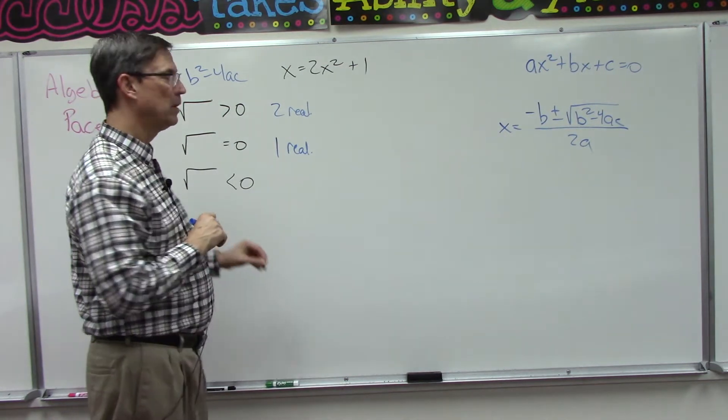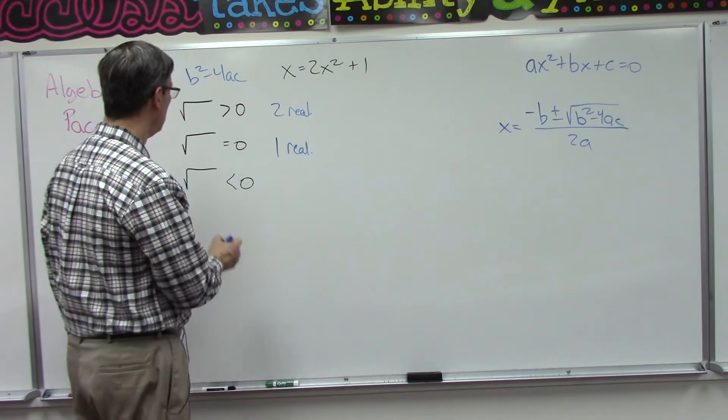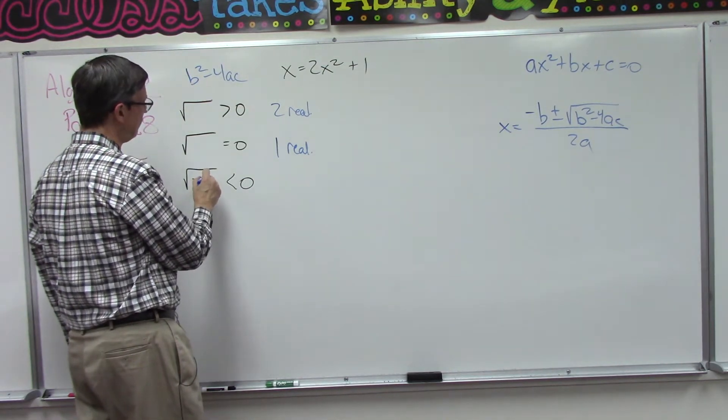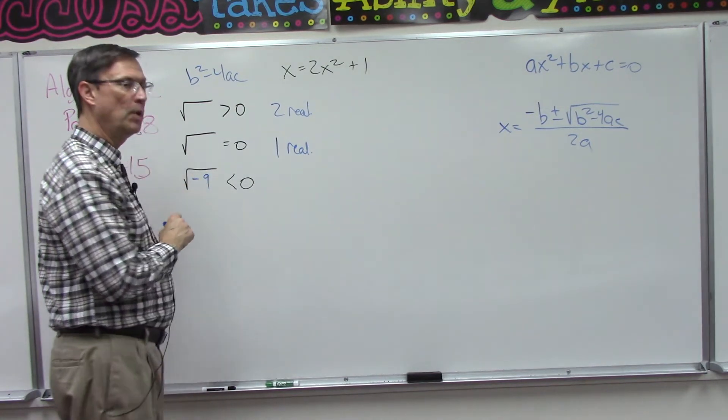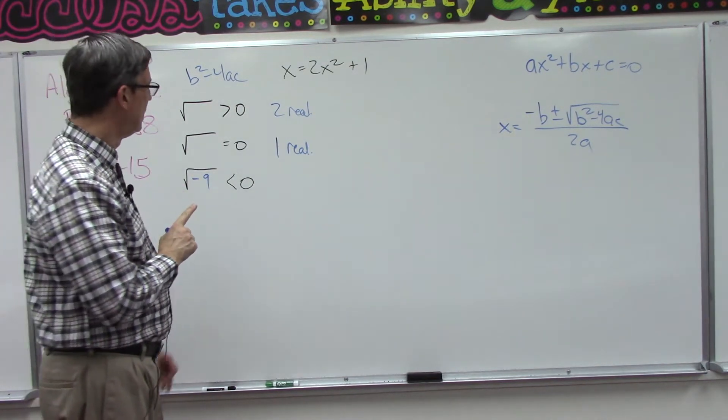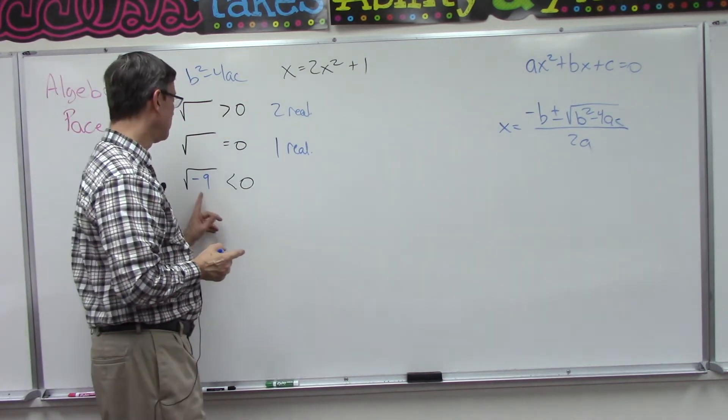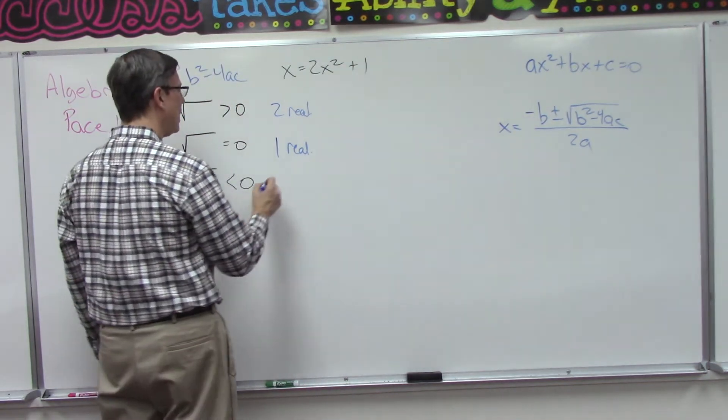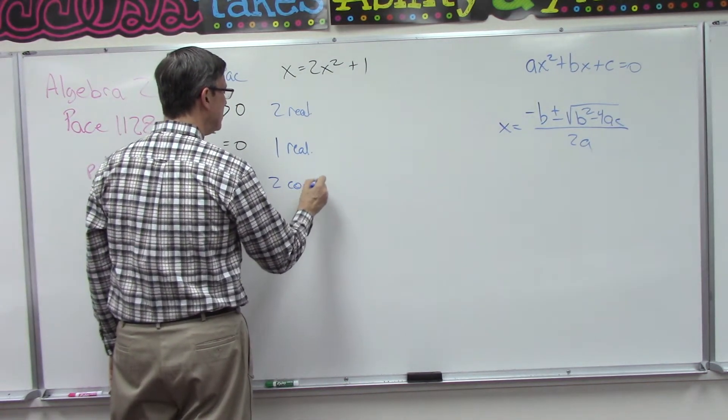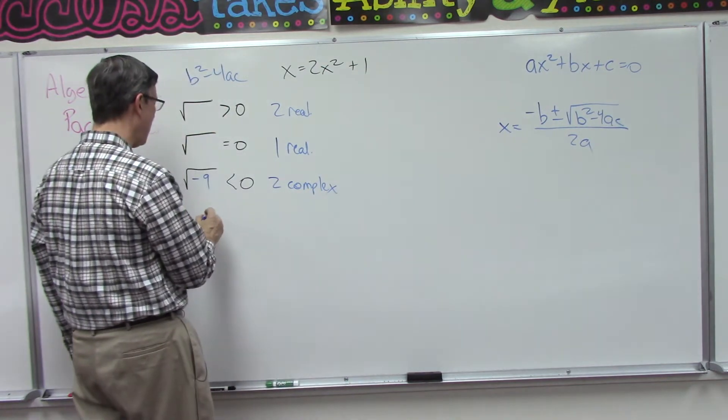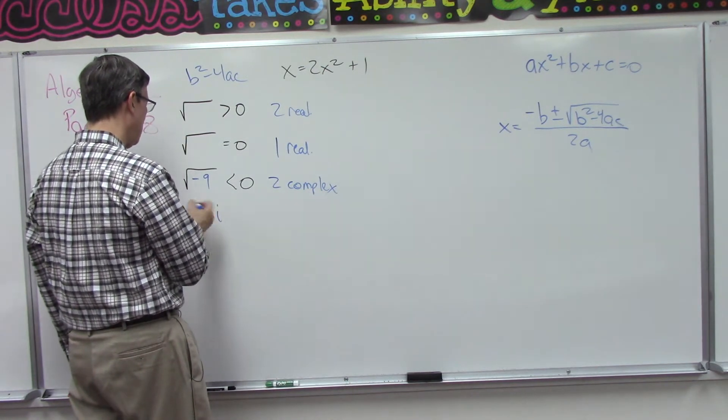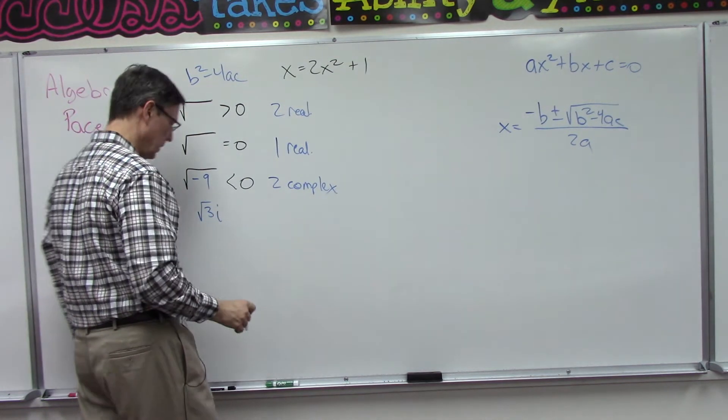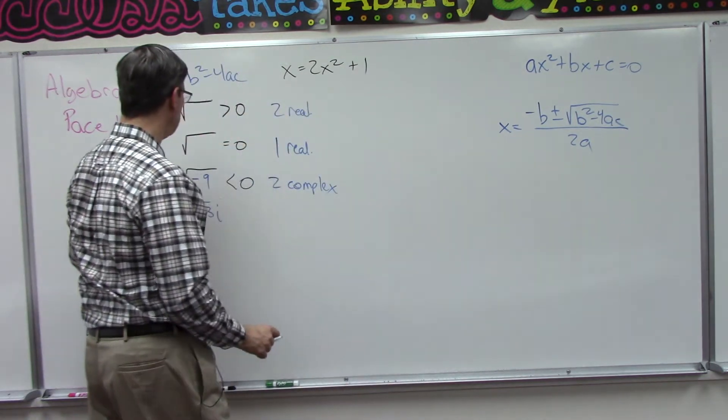And then if whatever is under the radical ends up being less than zero—in other words, this part under here is a negative number—let's say negative nine. Say, 'Oh, the answer is negative three.' No, remember, negative three times negative three is positive nine. So if we have the square root of a negative number, this is actually called complex, because we are going to have i in the answer. We might have something like square root of three i. So the square root of a negative number becomes a complex number.